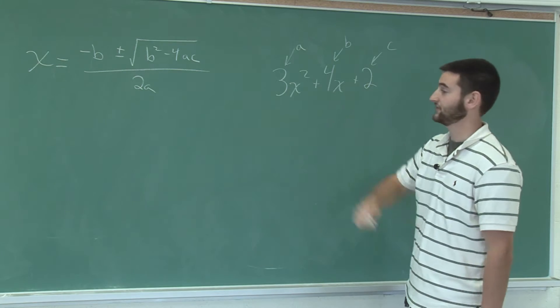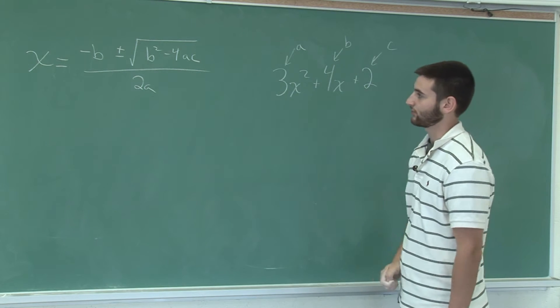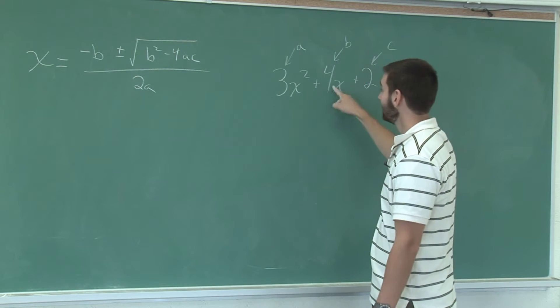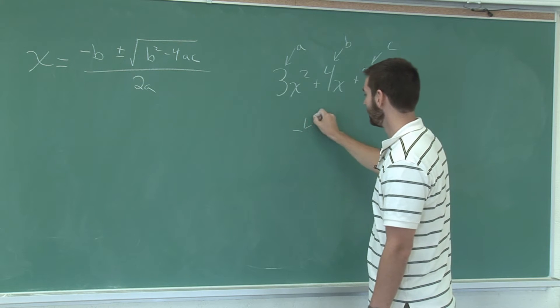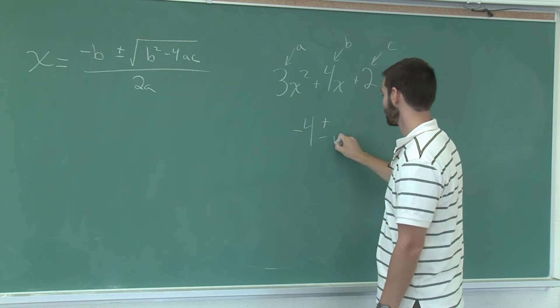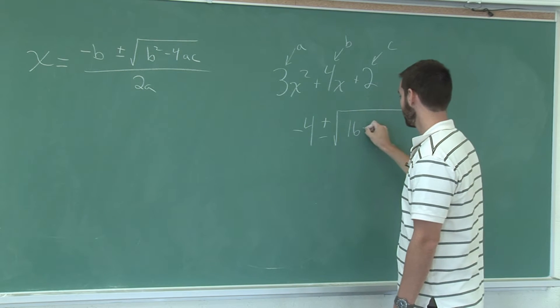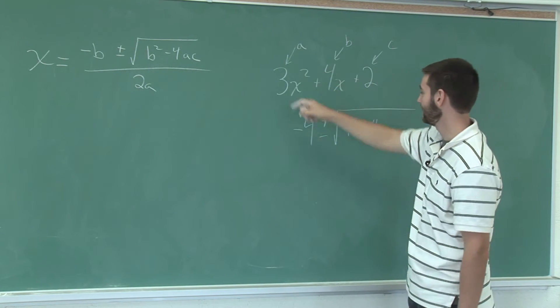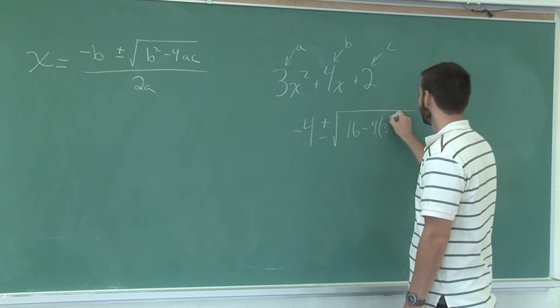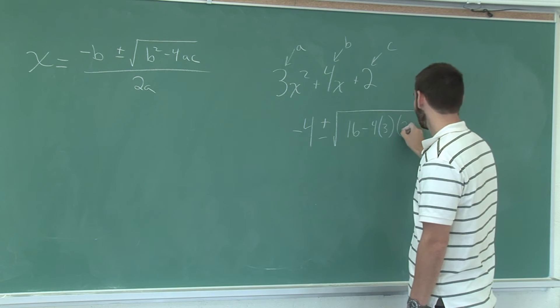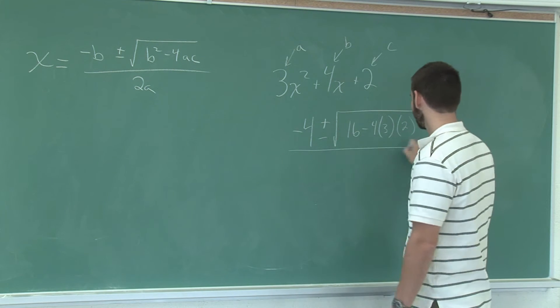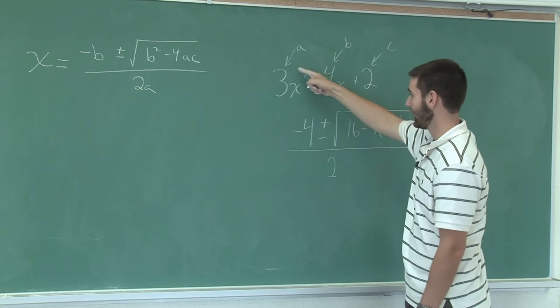To find what x equals, I use the quadratic formula. The opposite of b is negative 4 plus or minus the square root of b squared, 16, minus 4 times a is 3, c is 2, all over 2 times a, which is 3.